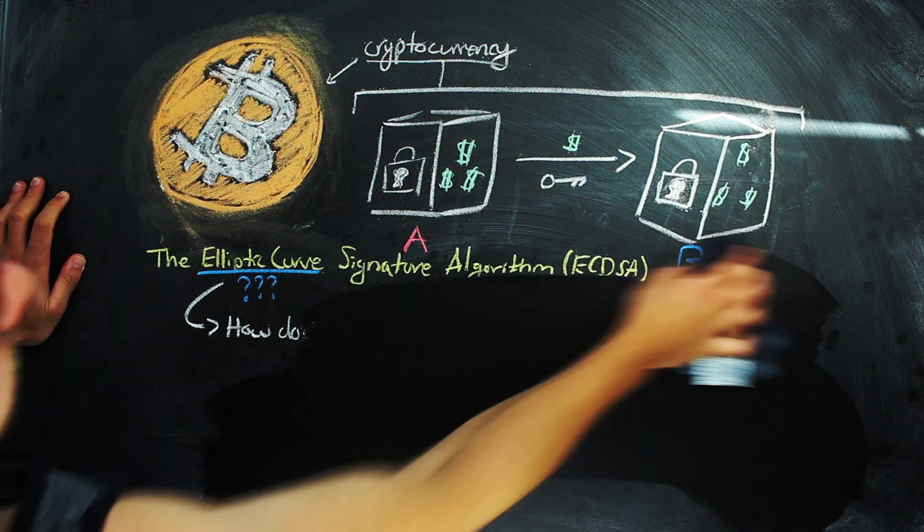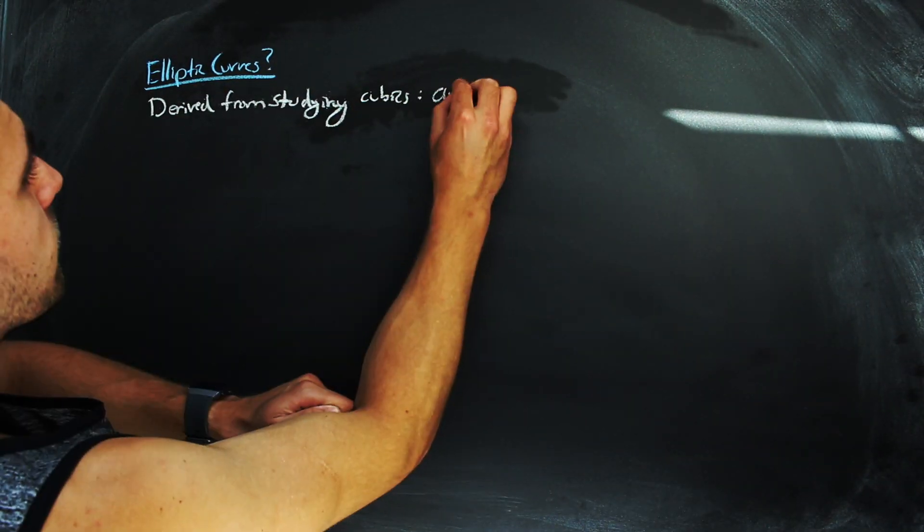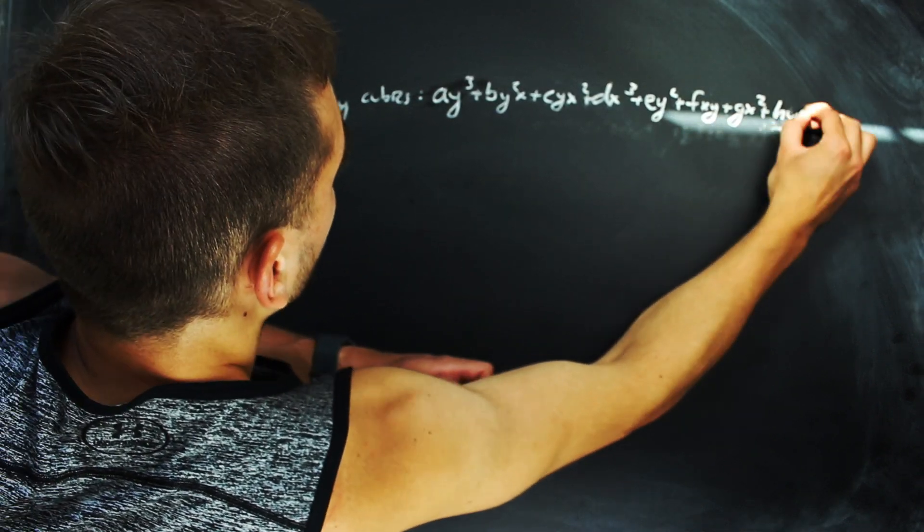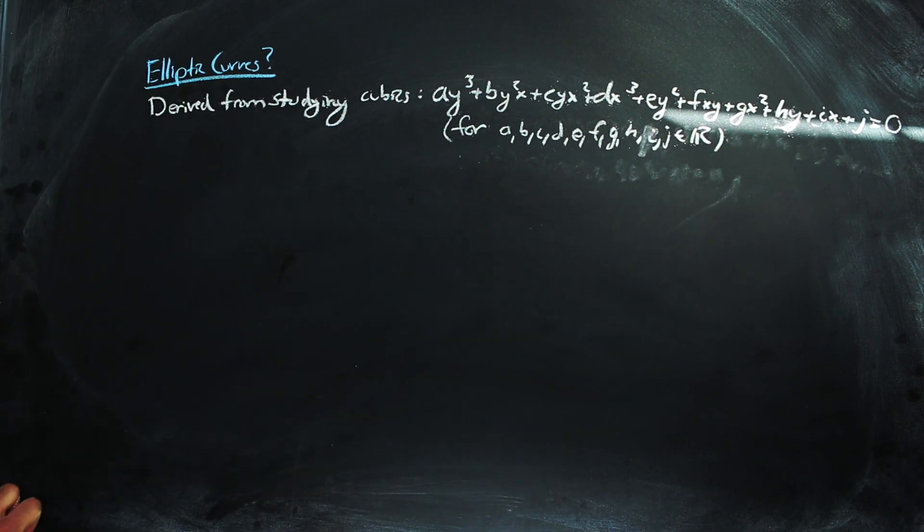We should probably go over what an elliptic curve is. In general, elliptic curves are derived from cubic curves, or things that are described by this equation for some coefficients a, b, c, d, e, f, g, h, i, and j.